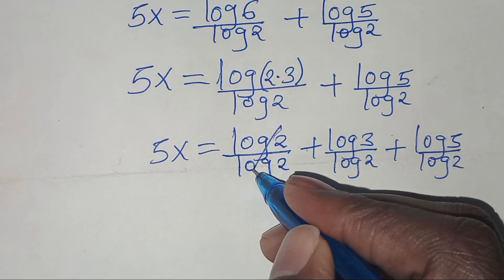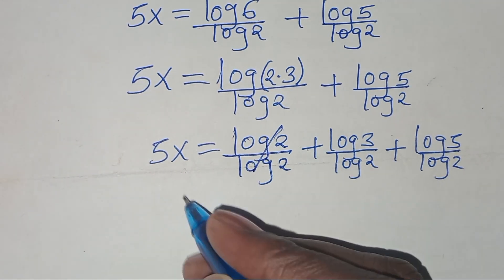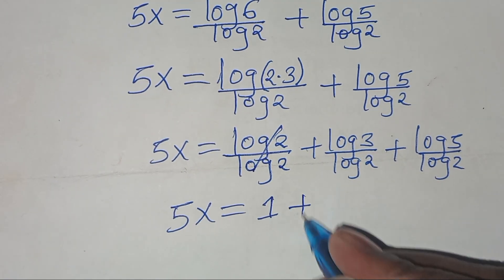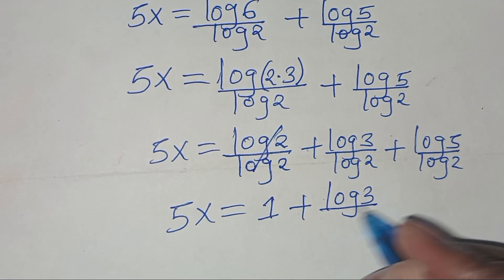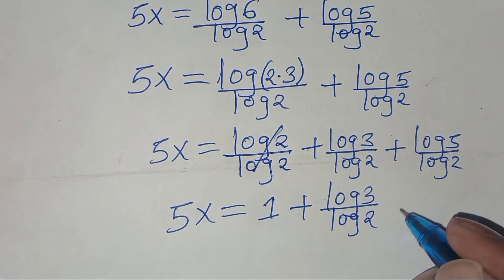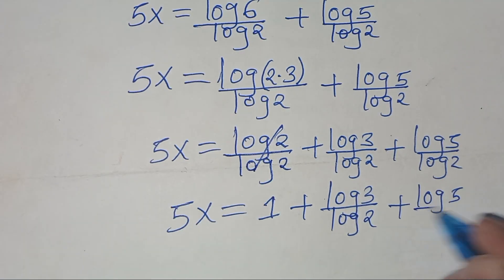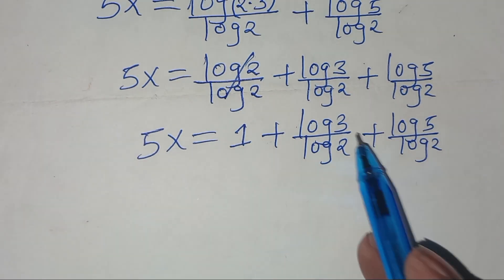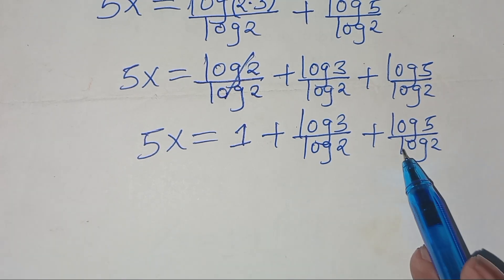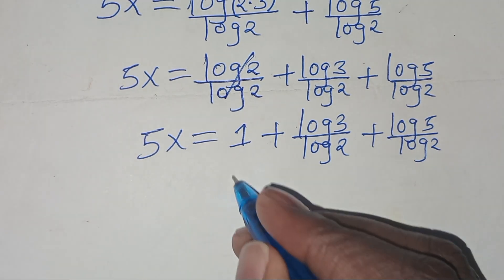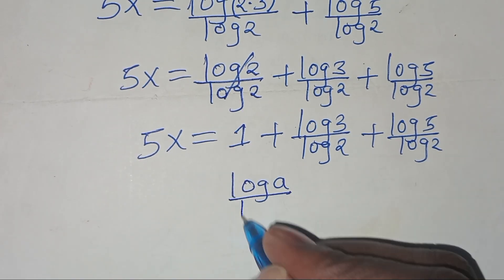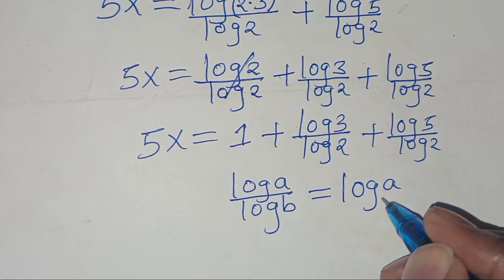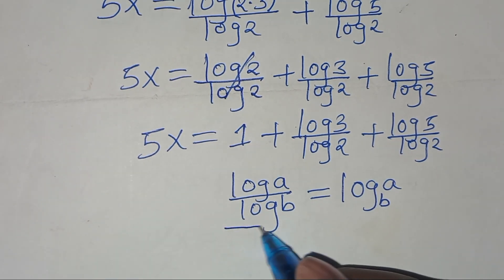Simplifying, log 2 divided by log 2 equals 1, so we have 5x equals 1 plus (log 3 divided by log 2) plus (log 5 divided by log 2). Now, log 3 divided by log 2 and log 5 divided by log 2 are in the form of log a divided by log b, which we can express as log a to base b. Let's apply this property.